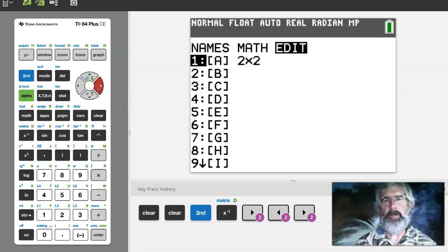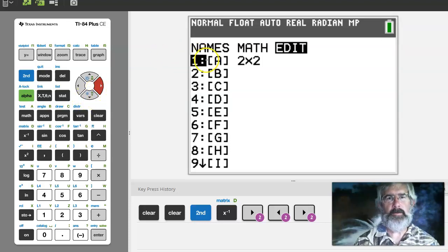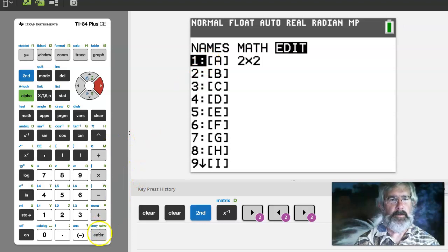And the edit is when you're going to enter stuff into a matrix and that's what we need to do first. So let's go to matrix A here. It's already got A selected, so let's just say enter.